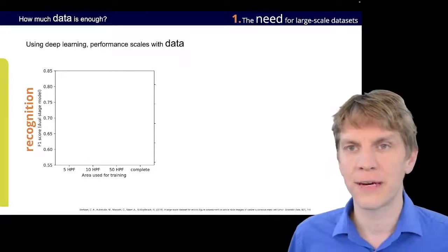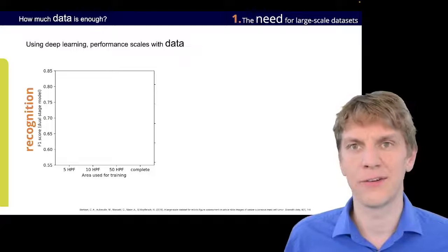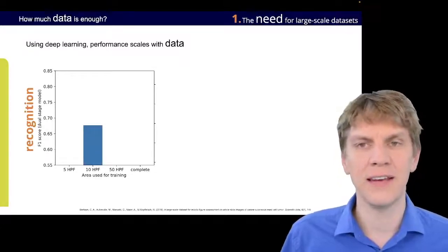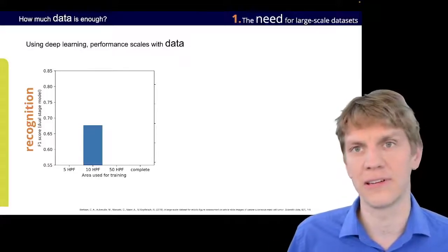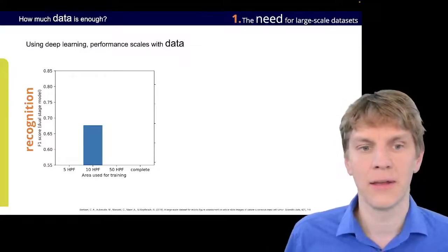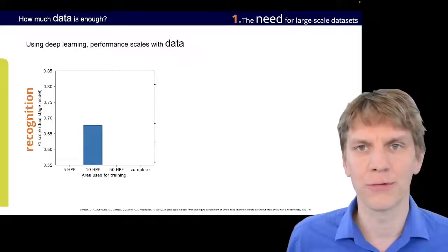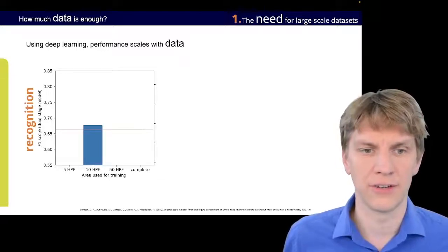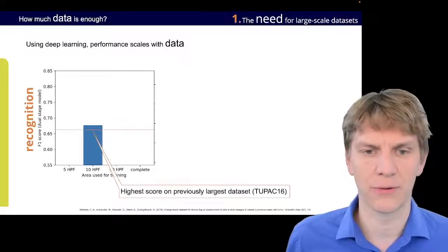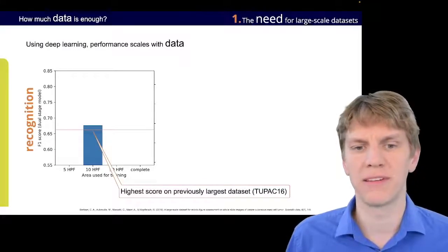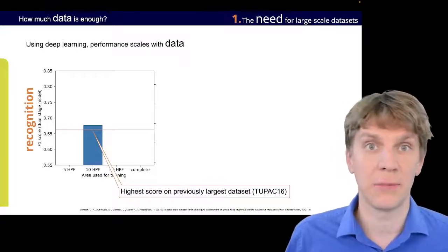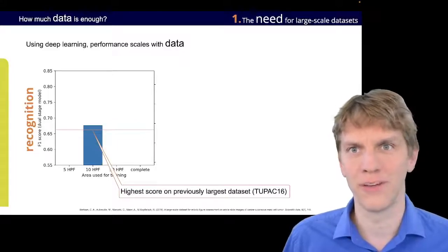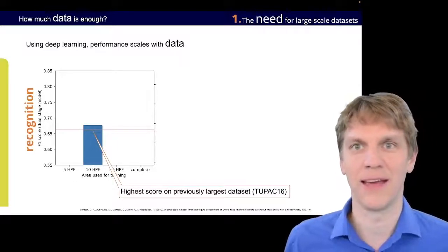But we also found that the effect that this has, like only the annotation size on such a microscopy slide, is also tremendous. Now, when we first ran our experiments and we limited this, like we limited what we trained our models upon to the usual size, 10 high power fields, that is approximately 2 square millimeters. Then we found that the recognition performance was very similar to what you could find as the state-of-the-art in literature. So that was, in this case, the highest score that we had previously seen on the largest previously available dataset, which was back then the TUPAC 16 dataset from Mitko Veta and his colleagues.